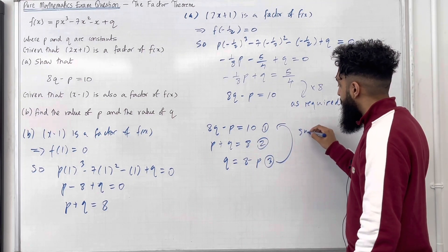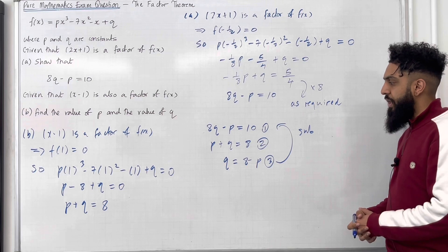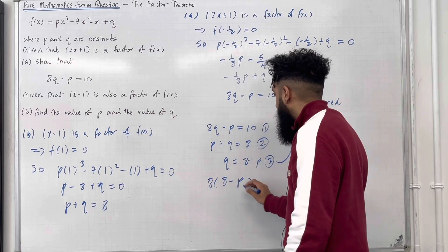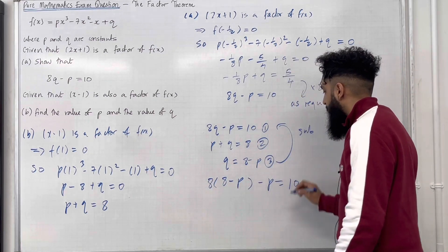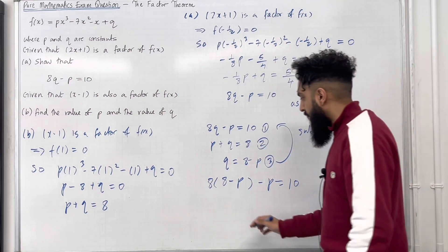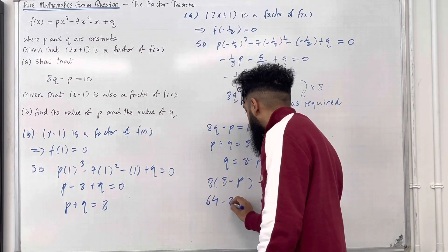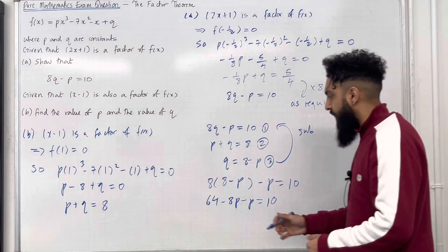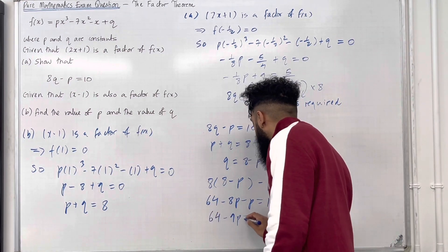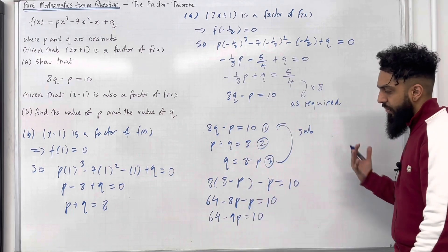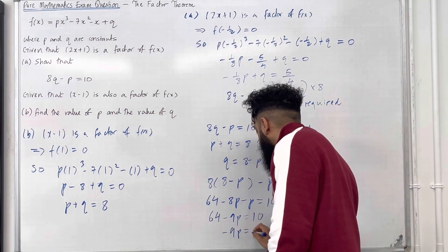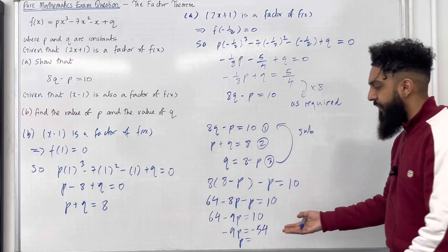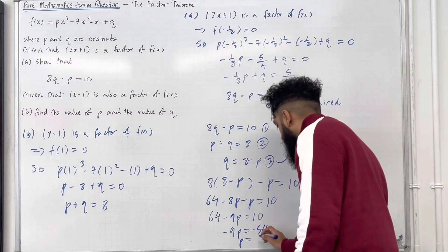Substituting equation 3 into equation 1 gives 8 times (8 minus p) minus p equals 10. Expanding the bracket: 64 minus 8p minus p equals 10. Cleaning up the equation: 64 minus 9p equals 10. Taking 64 to the right-hand side: minus 9p equals minus 54. Hence p equals minus 54 divided by minus 9, which is 6.